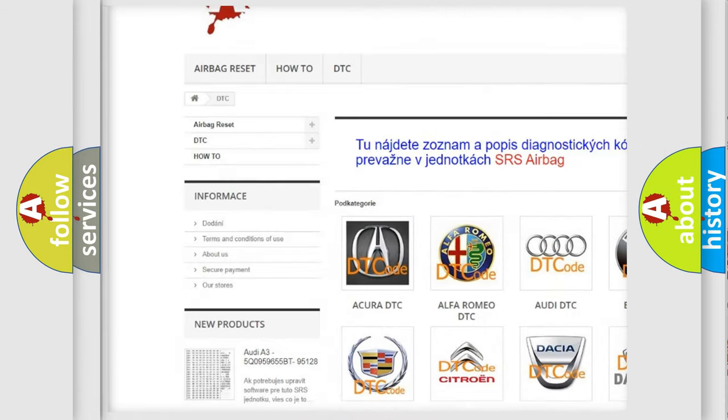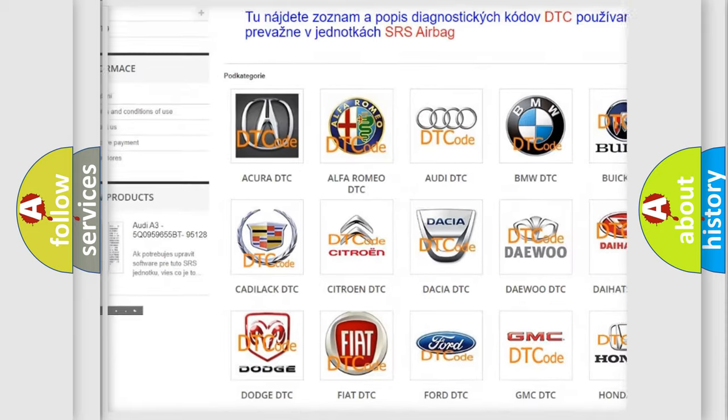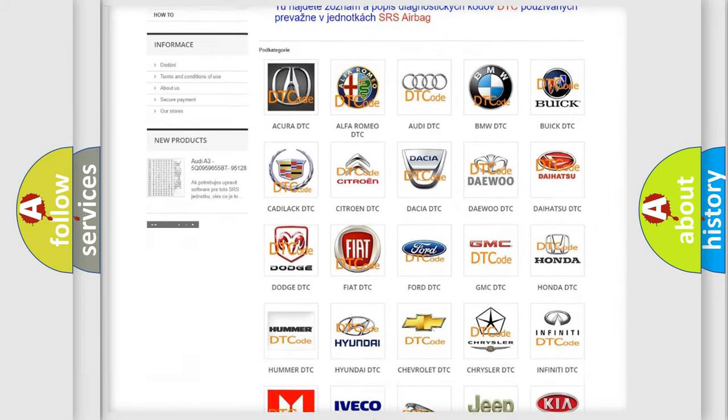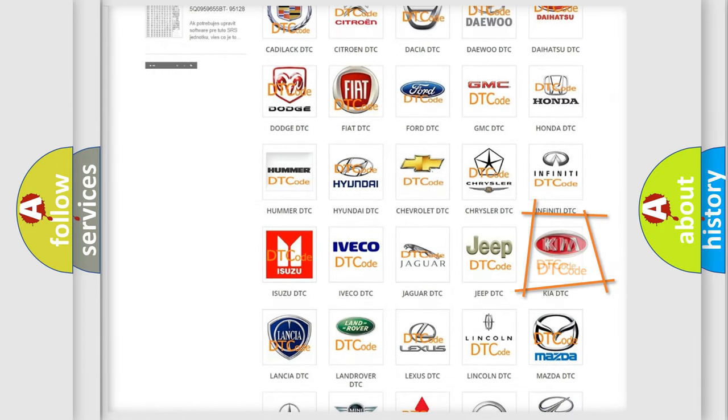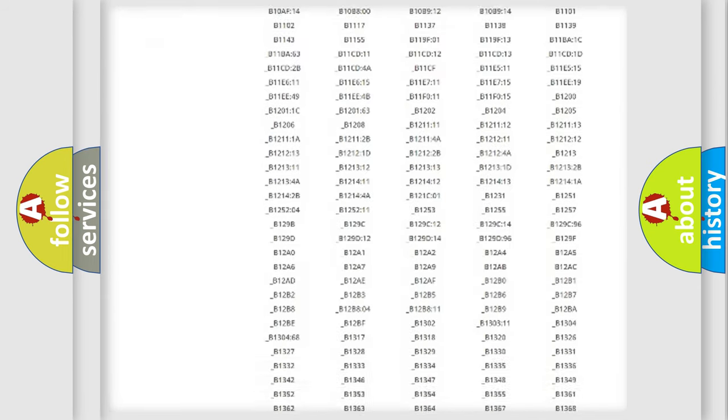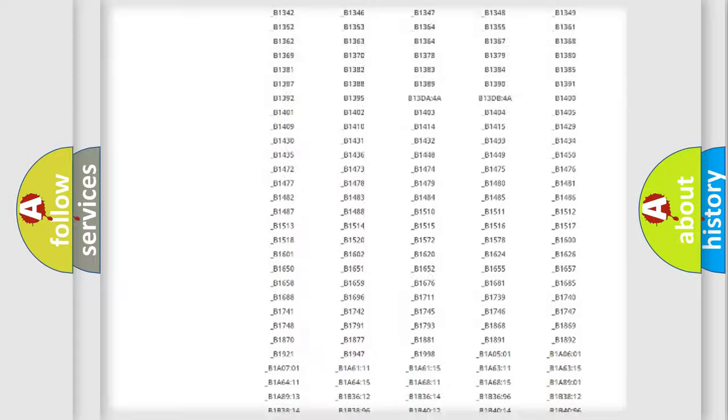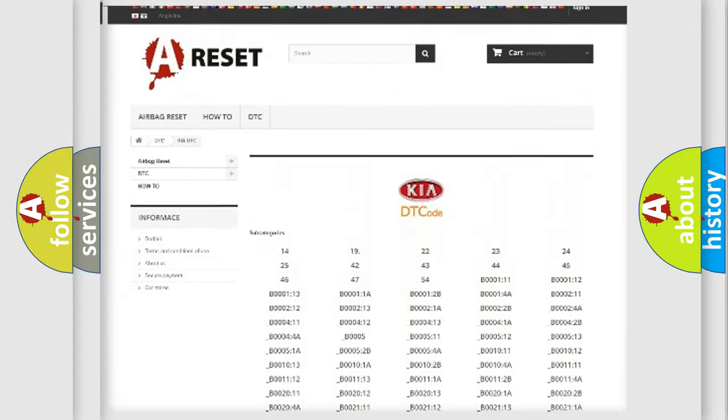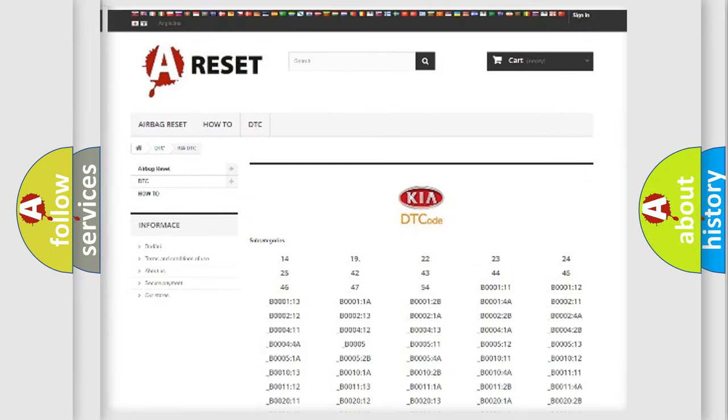Our website airbagreset.sk produces useful videos for you. You do not have to go through the OBD2 protocol anymore to know how to troubleshoot any car breakdown. You will find all the diagnostic codes that can be diagnosed in Kia vehicles, and also many other useful things.